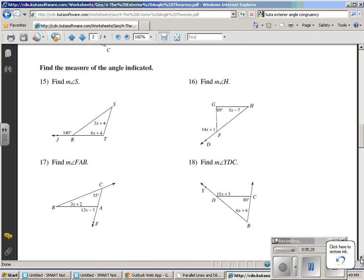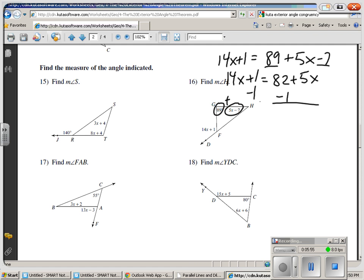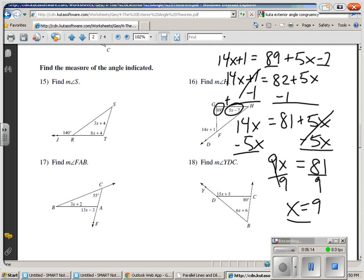Let's do another one of these examples. Let's try number 16. So 14x plus 1 is equal to 89 plus 5x minus 7. Combine like terms. 89 minus 7, we get 82. And that's equal to 14x plus 1. Then we subtract 1 from each side to get all the constants on the right side. And we get 81 plus 5x is equal to 14x. Then I'm going to subtract 5x from each side. And we get 81 is equal to 9x. Divide each side by 9. And we get x is equal to 9.